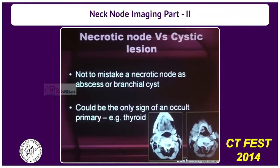A necrotic node should not be mistaken as an abscess or branchial cyst. As the previous speaker Dr. Barton beautifully demonstrated, don't assume everything is a branchial cyst — it could be the only sign of an occult primary such as thyroid.